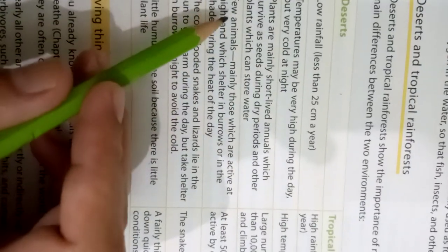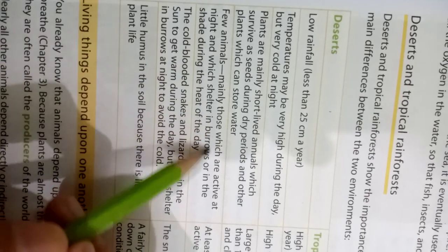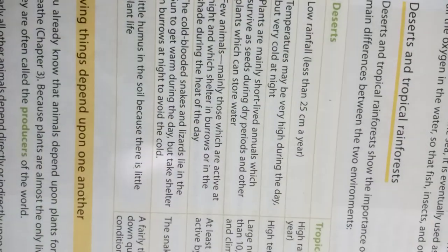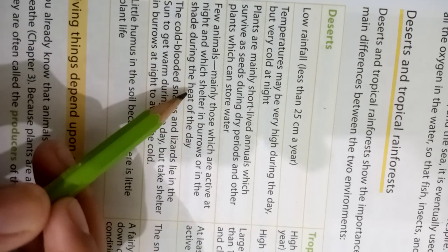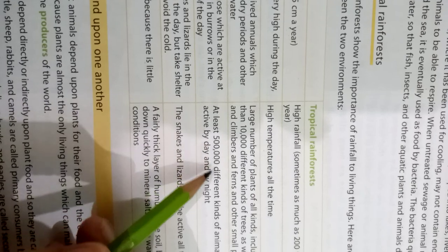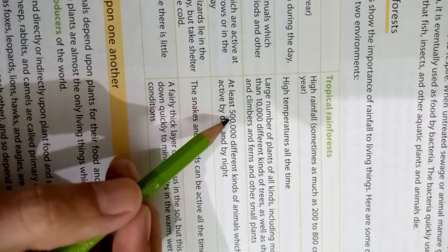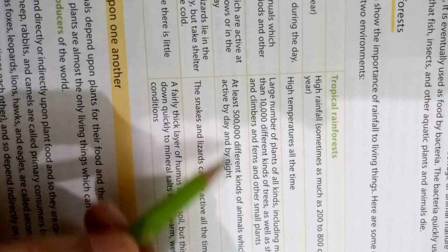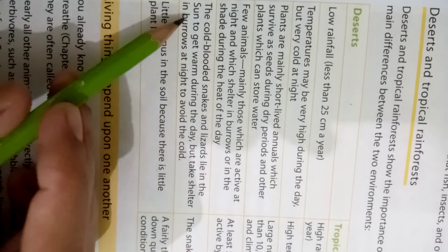In the desert, there are few animals — mainly those which are active at night and shelter in burrows or in the shade during the heat of the day. In the tropical rainforest, there are 500,000 different kinds of animals which are active during day and night.